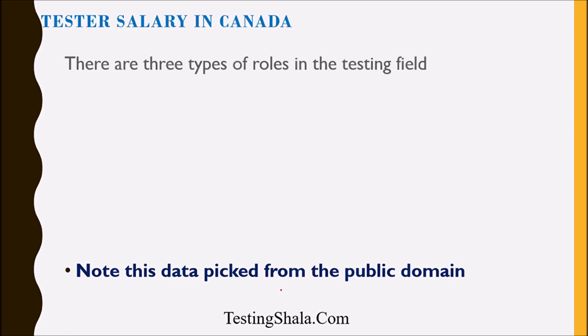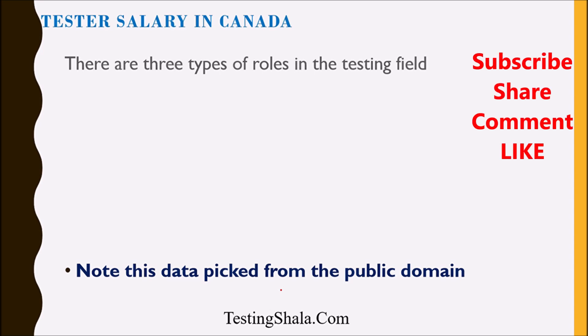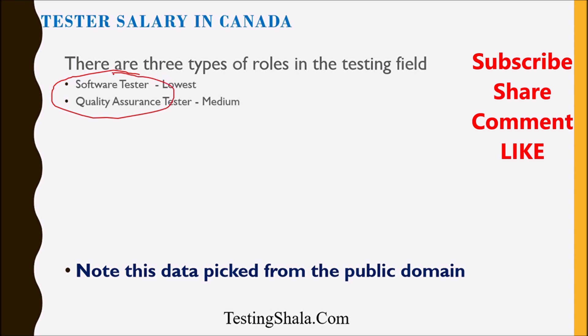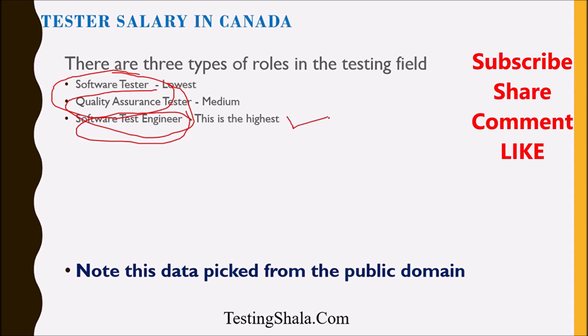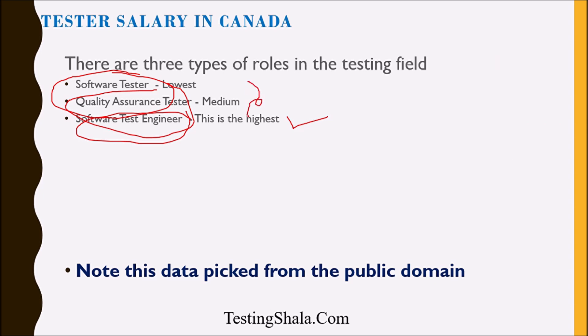In Canada, tester roles fall into three different categories: one is the title of software tester, the second is quality assurance tester, and the third is software test engineer. Software test engineer has the highest salary, as they come from an engineering background with programming skills and can bring automation. The other two roles draw a lesser salary as they are more oriented towards manual testing, managing processes, and adhering to software testing processes.